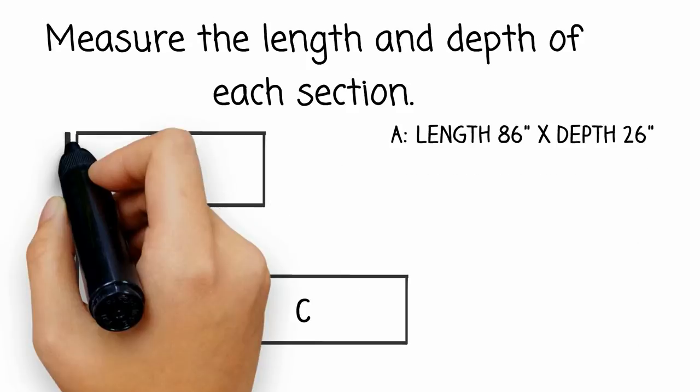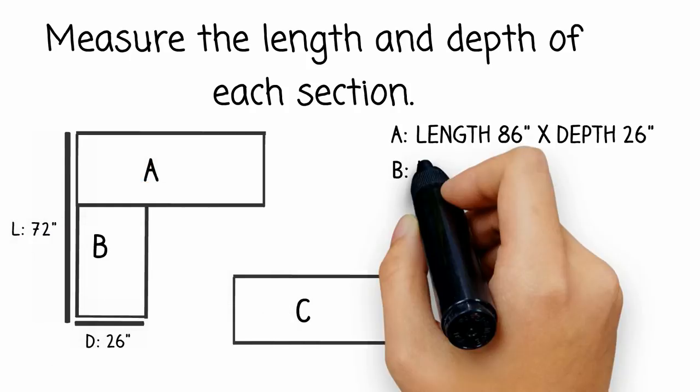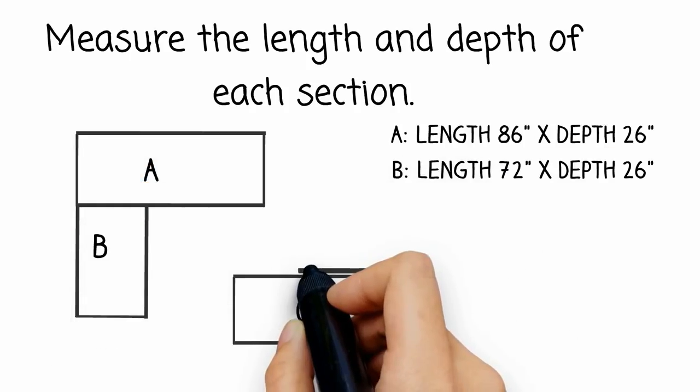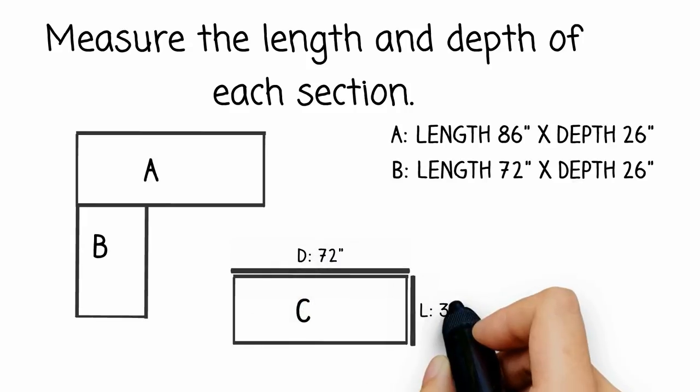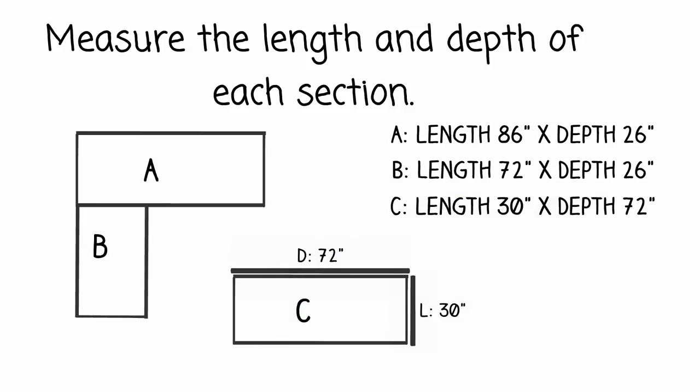Start from the wall and measure to the outer edge of your countertops. Islands are a separate measurement entirely. Though it's the same method as before, you need to measure for the overhang and seating area.